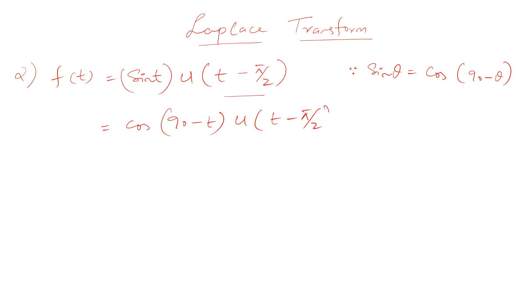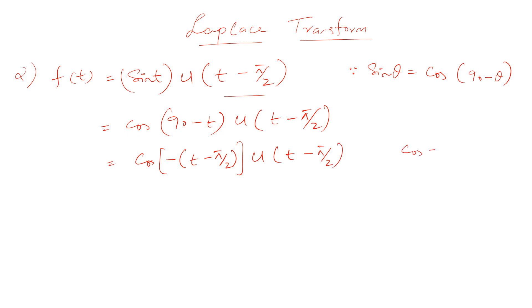Replacing 90° with π/2 and taking negative sign common, we get cos of negative (t minus π/2) multiplied by u(t minus π/2). Since cos(minus θ) equals cos(θ), we can write this as cos(t minus π/2) times u(t minus π/2).